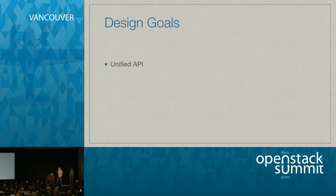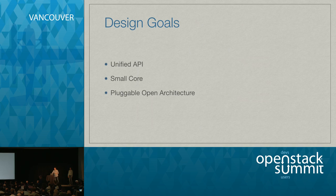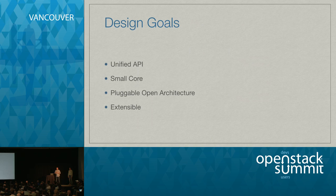Some of the design goals when we set out to create Neutron: to have a unified API to do network services, provide a small core — the benefit of a small core is that it's easy to have very compliant implementations because you have a very small surface area to match — but also have a pluggable open architecture. We didn't want to dictate which technologies to use because there are multiple ways to provide layer 2 connectivity. We wanted it pluggable to empower deployers to choose their backend, as well as extensible. Common extensions include routing, security groups, load balancing, and VPN layered on top of that small core.